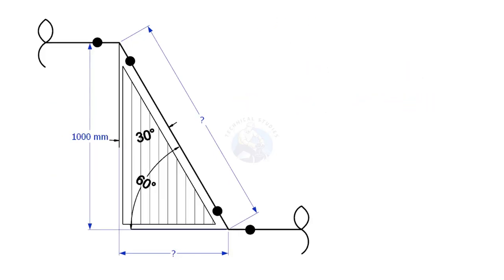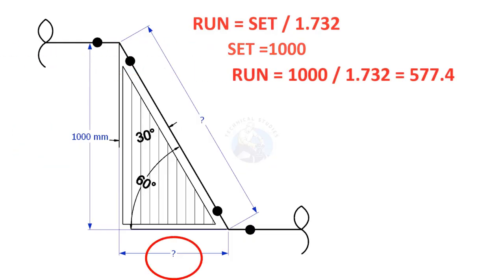In the similar manner, if the run is given and to find the set, divide the run with 1.732. Assume that the value of the set is 1,000. To get the value of the run, divide 1,000 with 1.732. The answer is 577.4.